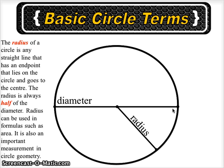Radius can be used in formulas such as area. The area formula for a circle is pi radius squared. It is also an important measurement in circle geometry.